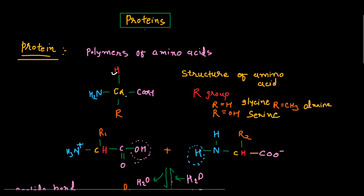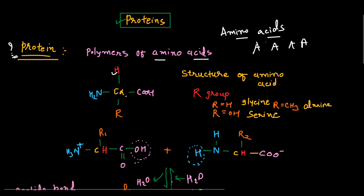Welcome to this video series on biomolecules. In this video we are going to talk about proteins. Proteins are the polymers of amino acids. The basic unit of protein is the amino acid — these amino acids attach together, form bonds, and make a sequence of amino acids. This polymerization of amino acids forms peptides and proteins. Proteins are formed in the cell and their functions differ based on their amino acids and different environmental conditions.